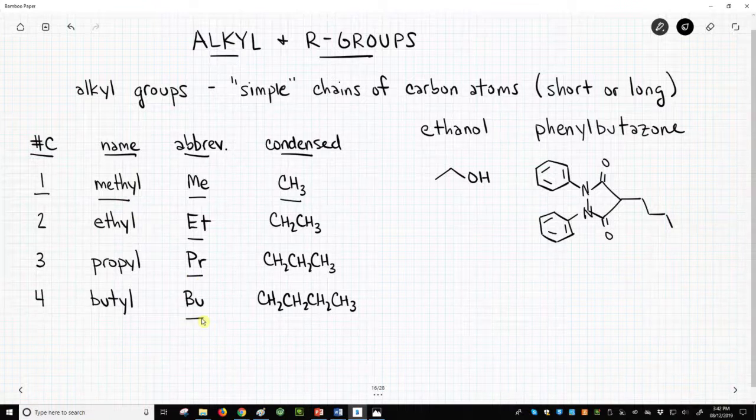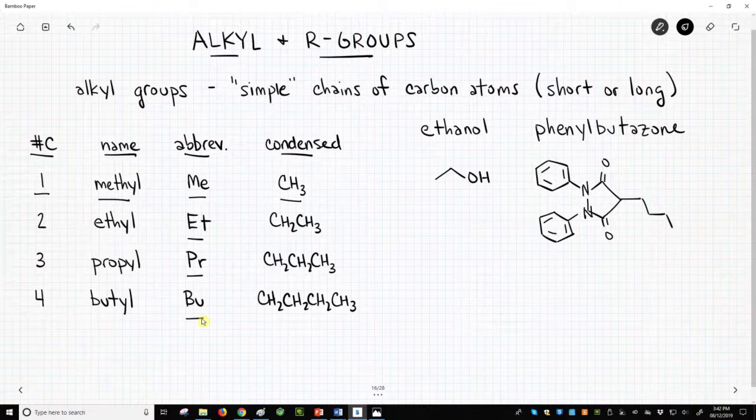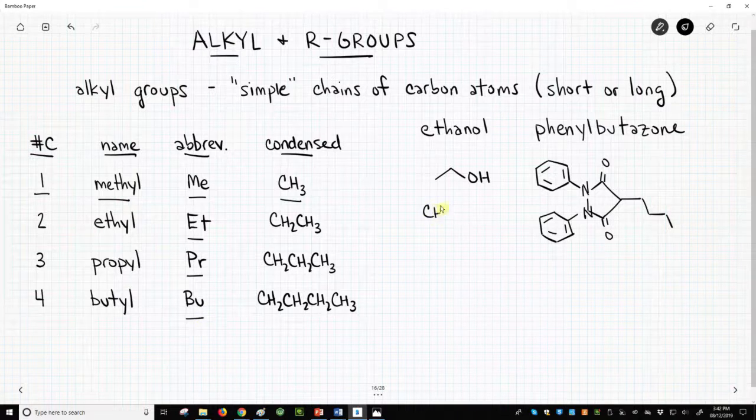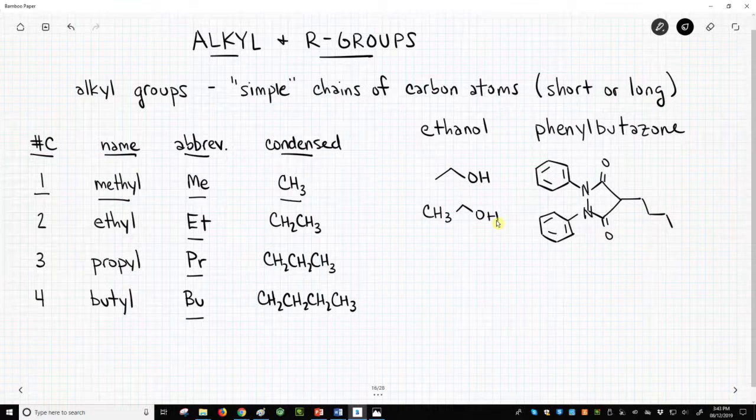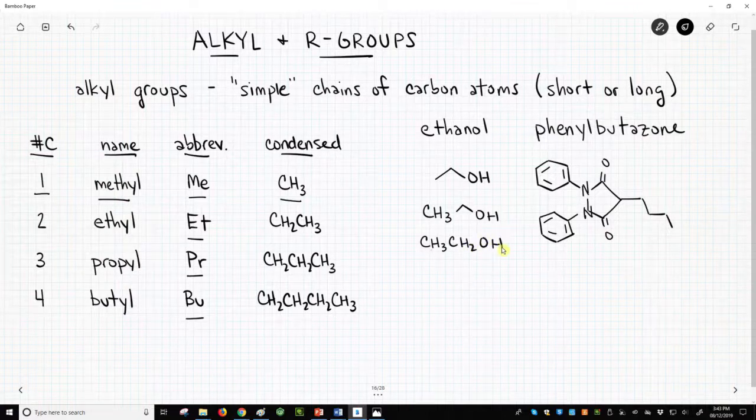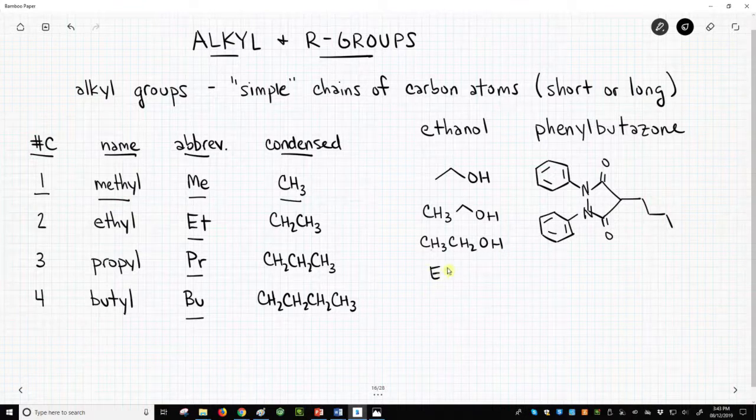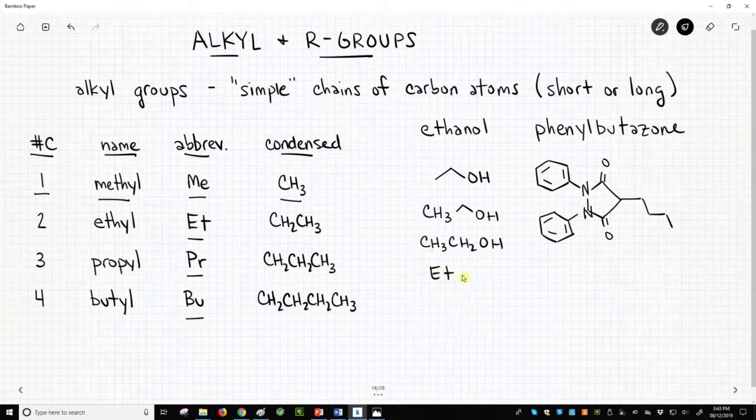We can go longer, but chains longer than butyl groups are uncommon in drug-like molecules. Let's look at ethanol. We could write ethanol with a CH3 on the end, with a CH3CH2 on the end, or with an ET for ethyl on the end.